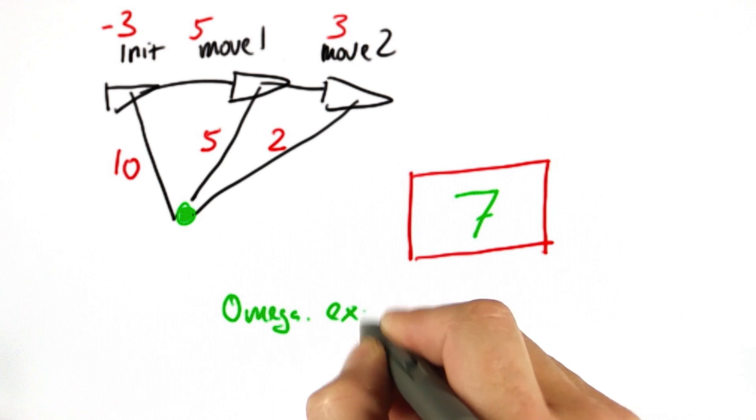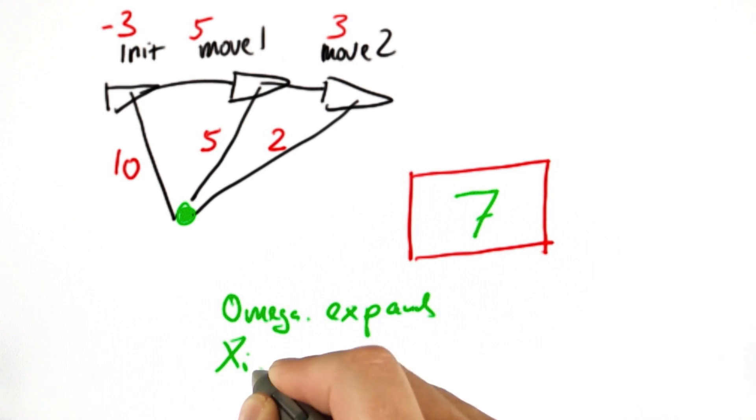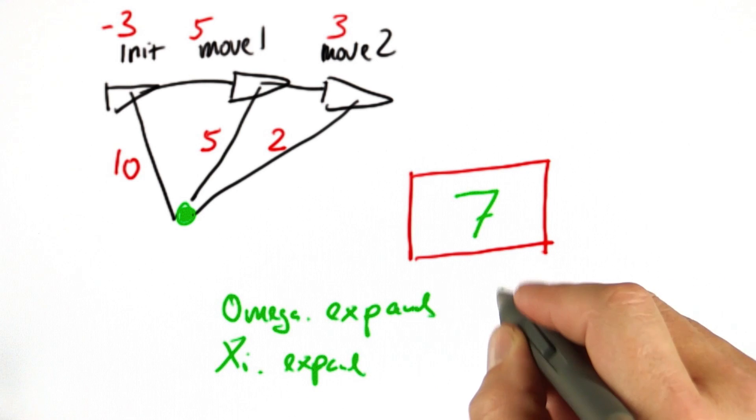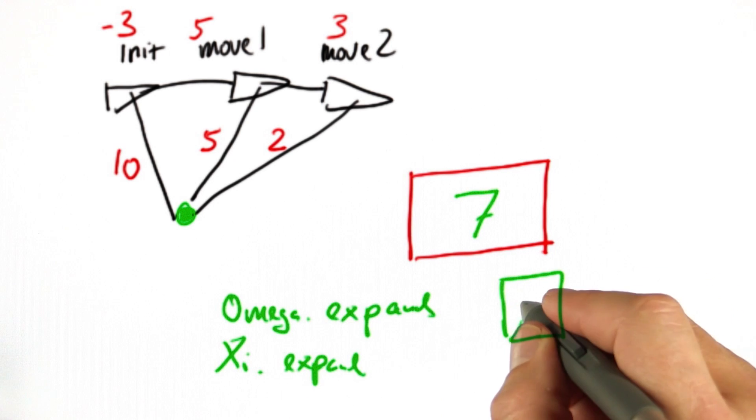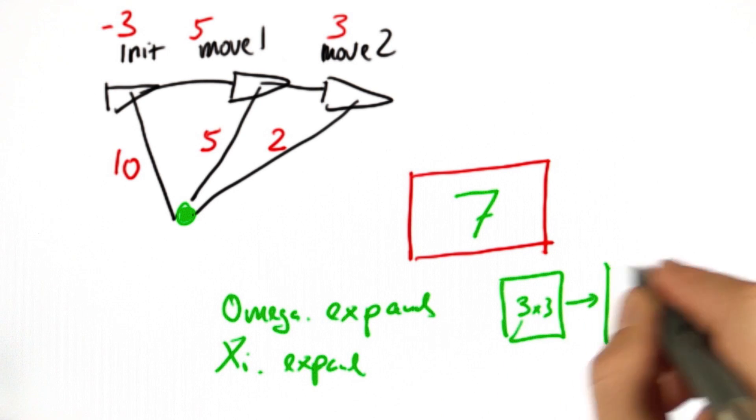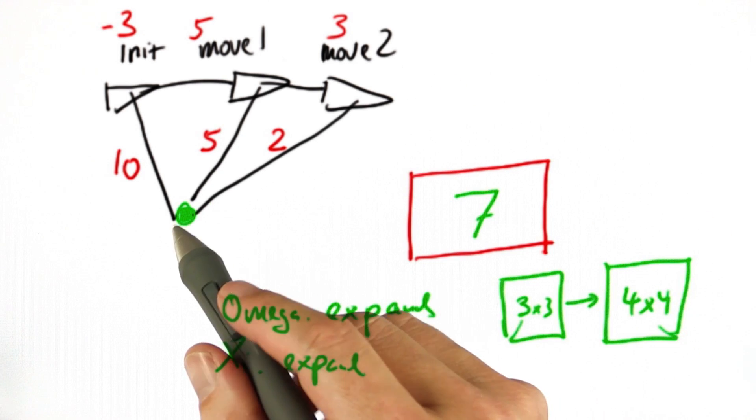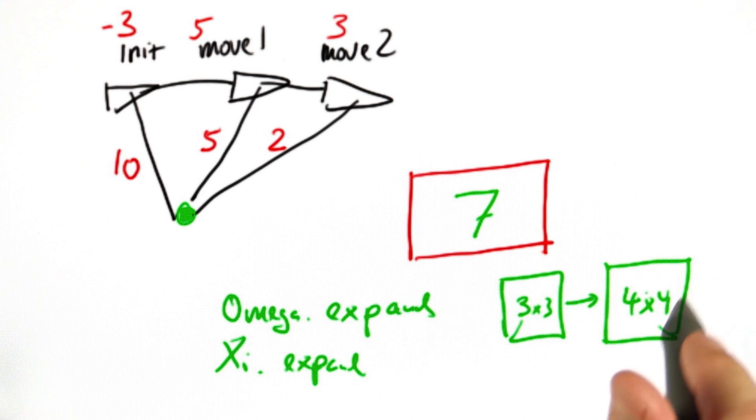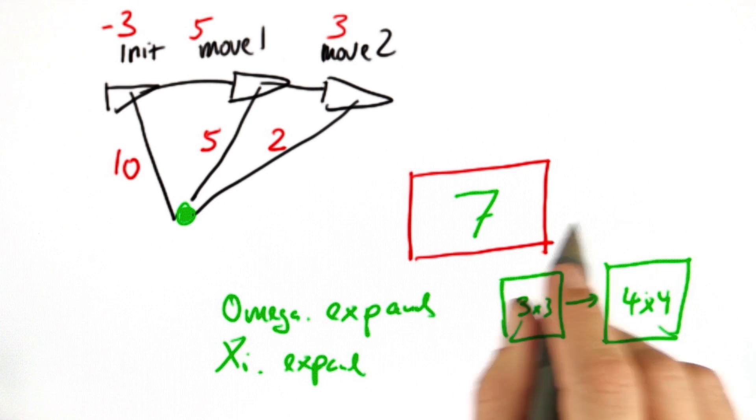So you can run omega.expand and c.expand to take your 3x3 matrix or vector and move it to a 4x4 vector that you actually need when you have to include the landmark itself. So give that a try and see if you can modify the code.